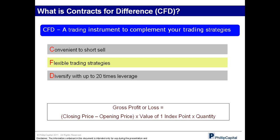CFDs also provide a bigger bang for your investment capital because of leverage — up to 20 times. Having 20 times leverage means you only require a 5% margin to invest in index CFDs. The calculation for any gross profit or loss is simple: take the closing price minus the opening price, then multiply by the value of one point of the particular index you are trading and the number of contracts.